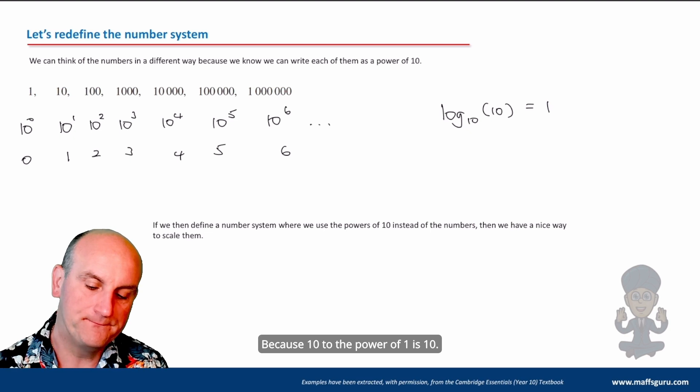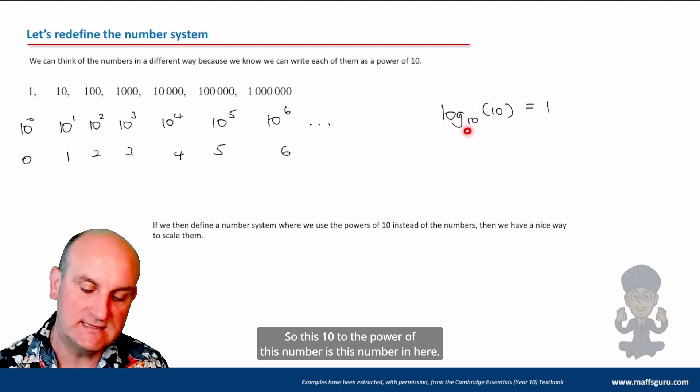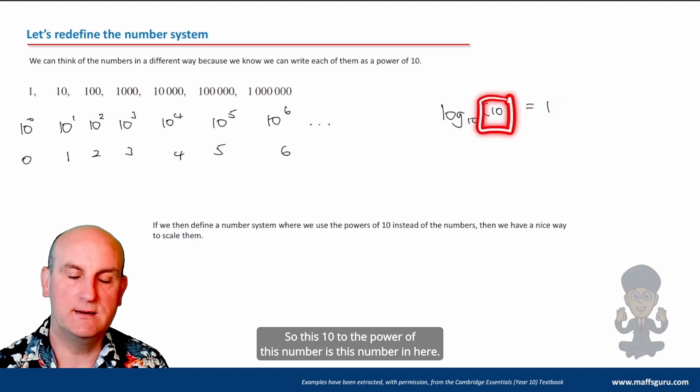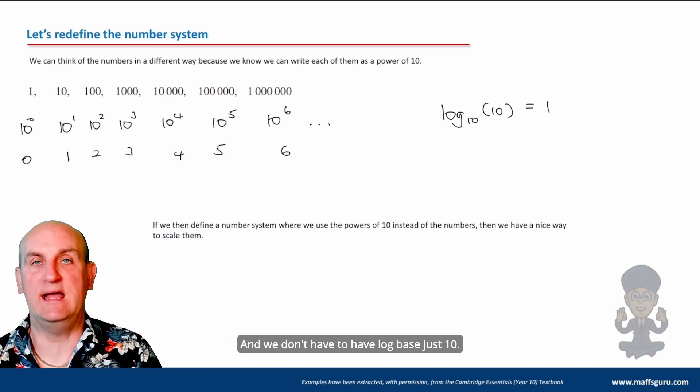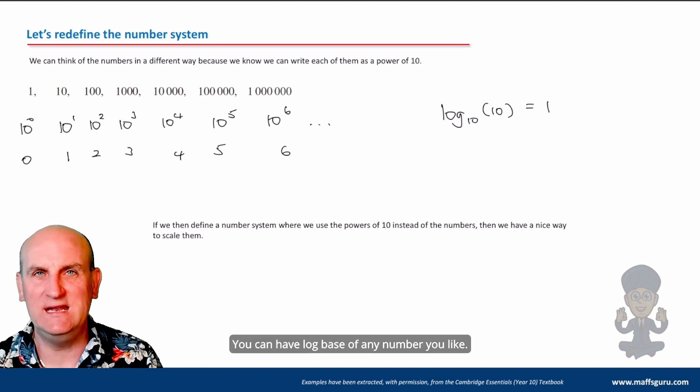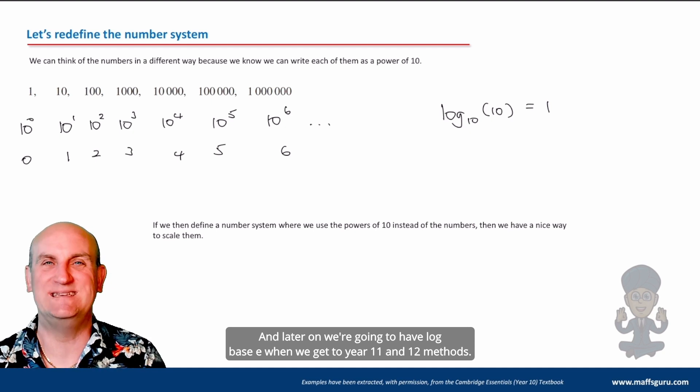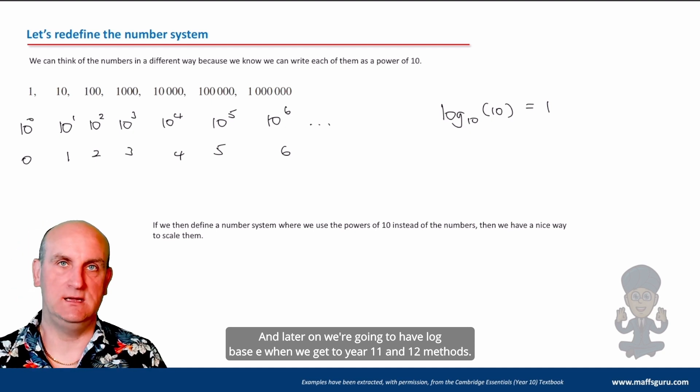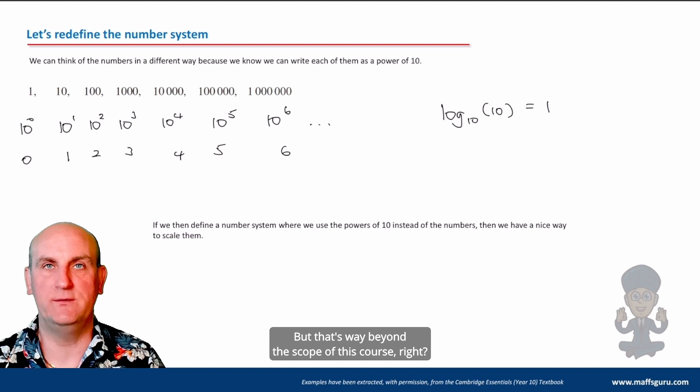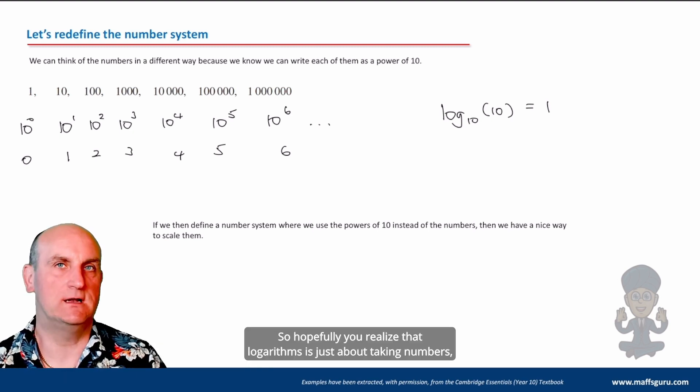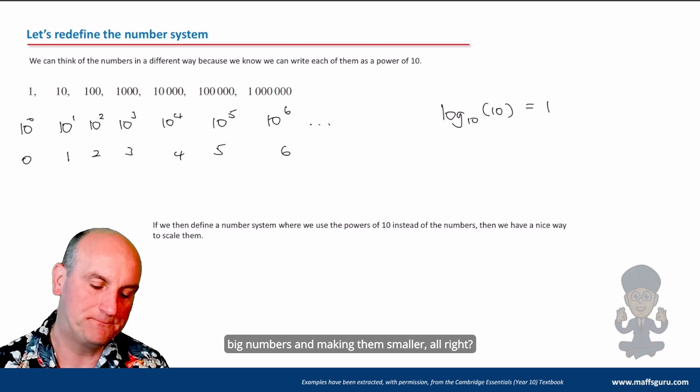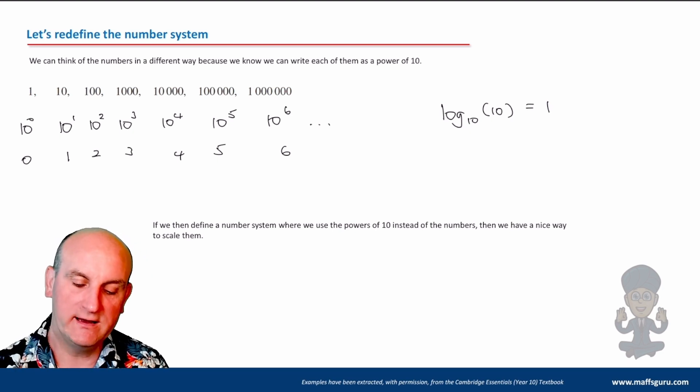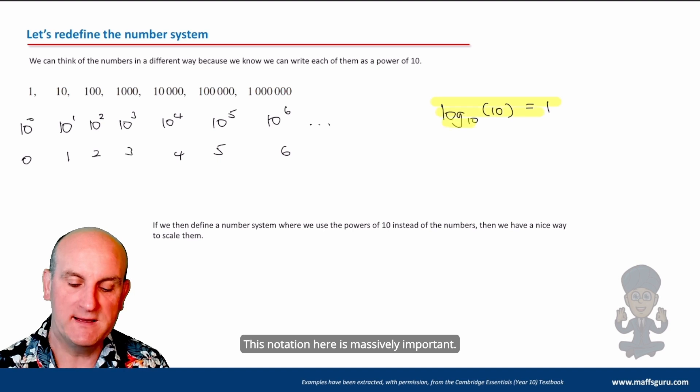Now the way we express that is we now say log base 10. So log base 10 is basically saying we are thinking now of powers of 10. So log base 10 of 10 would be equal to 1. Why? Because 10 to the power of 1 is 10. So 10 to the power of this number is this number in here.